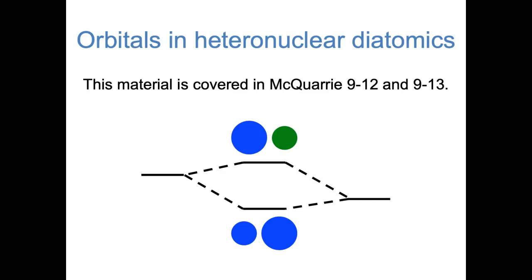Hi everybody. In the previous video, we looked at the molecular orbital diagrams of homonuclear diatomic molecules. In this video, we'll extend those ideas to see what happens when the two atoms in the molecule are different from each other.